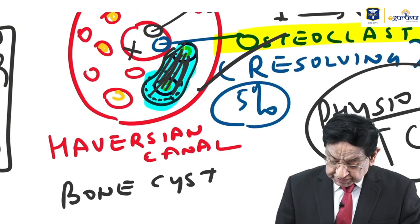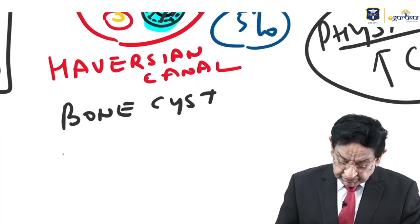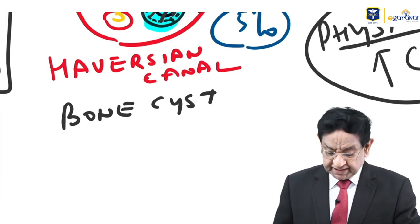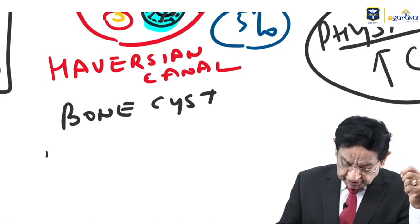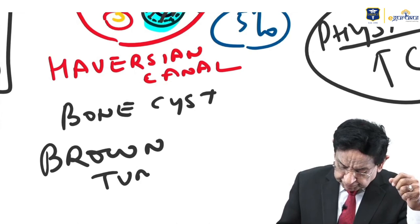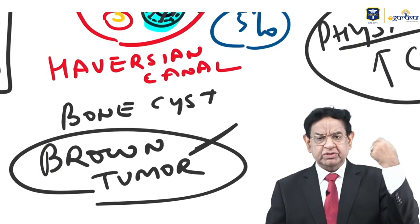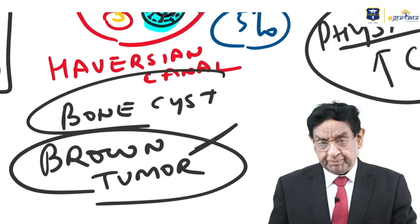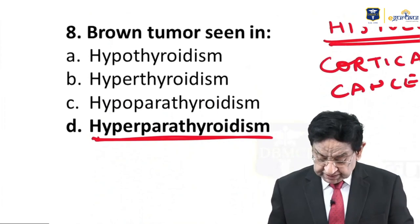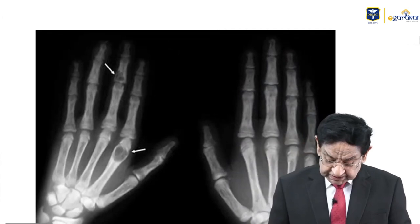The brown tumor is not actually a tumor — this is a very frequently asked question worldwide. Brown tumor is seen in hyperparathyroidism. X-ray shows a brown tumor appearance. We also see pepper pot appearance on skull X-ray — small dots on the skull — which is also a frequently asked question.